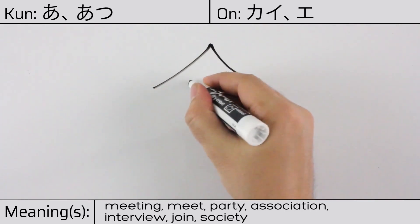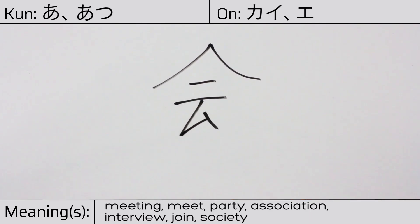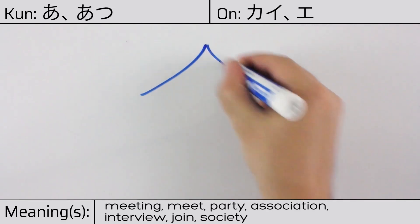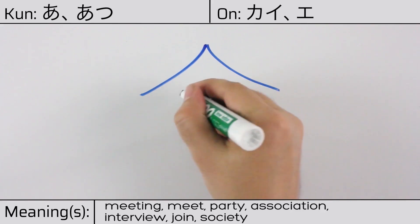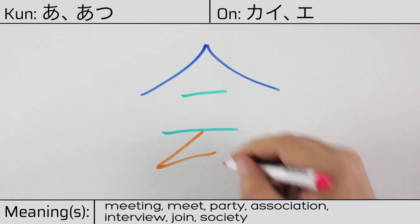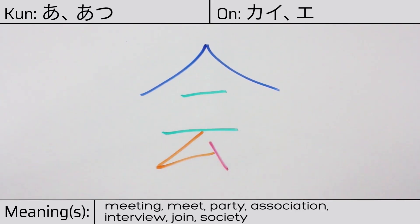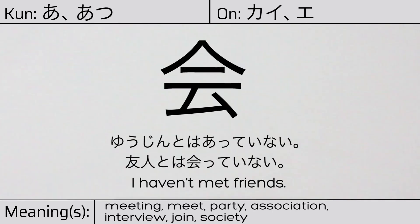Here is the stroke order. This character is made up of the following radicals or parts: the stylized person or hito known as hitoyane at the top, followed by kanji ni or two, with katakana mu at the bottom. You can remember this kanji by the following hint: two individuals under the same roof. Our example sentence is: I haven't met my friends.